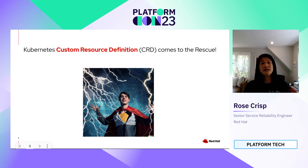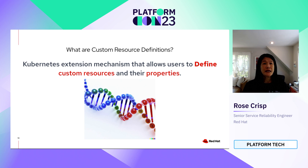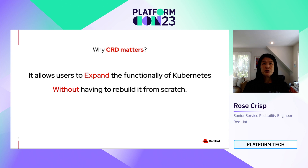This is where custom resource definition comes to the rescue. Custom resource definition, or CRD, is a way to extend the Kubernetes API to allow users to define custom resources and their properties. Much like how DNA contains genetic information that shapes the way you look and behave, CRD contains the information that defines the properties of custom resources in Kubernetes. CRD matters because it allows users to expand the functionality of Kubernetes without having to rebuild it from scratch, and custom resources can be managed using the same tools and workflows as built-in Kubernetes resources.